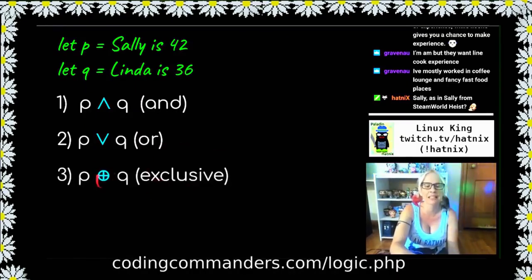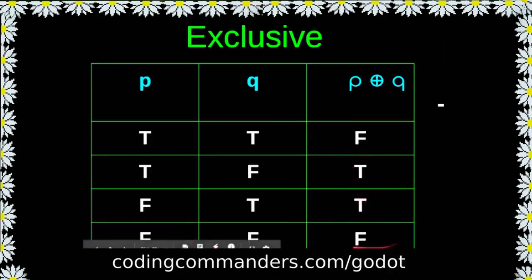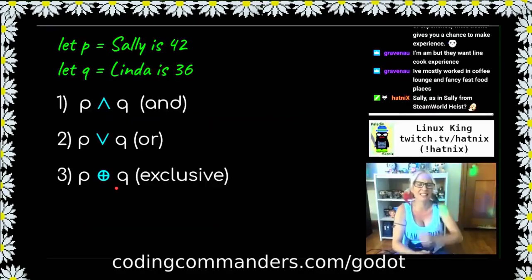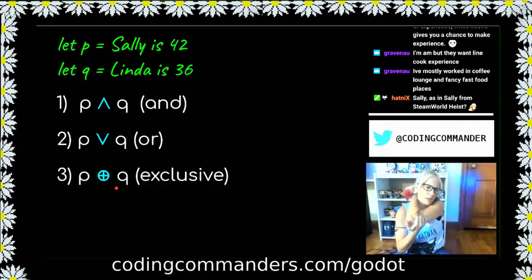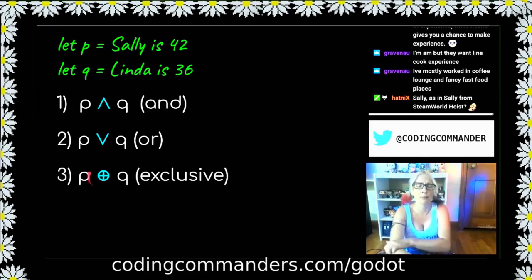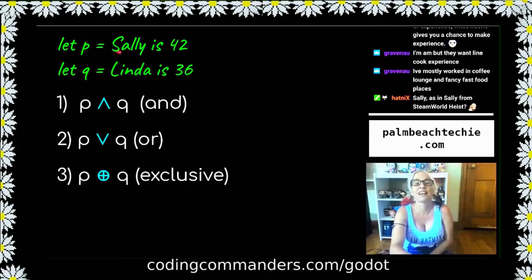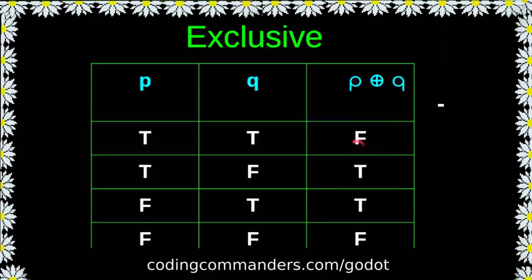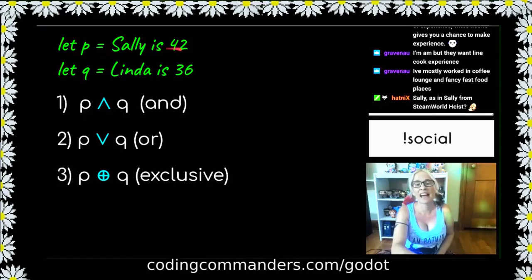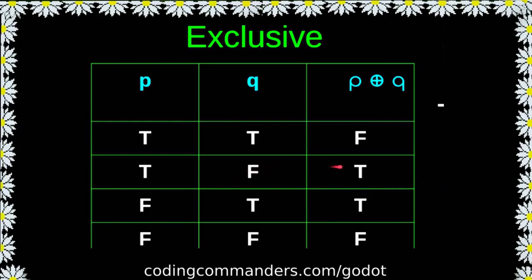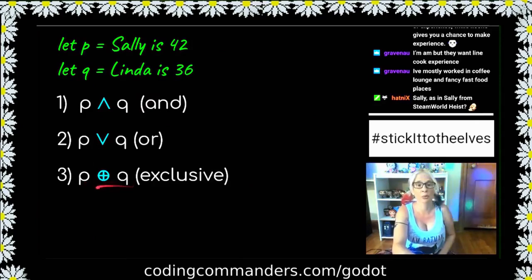Exclusive. This symbol means exclusive. There's two possibilities of truth and two of untruth. I didn't see an exclusive operator in GDScript. If anybody knows there is one and I just missed it somewhere, let me know. But I didn't see an exclusive operator. But many programming languages have this. What this means is this evaluates true if p is true or q is true, but they can't both be true. If Sally's 42 and Linda's not 36, this will be true. If Sally's not 42 but Linda is 36, this will be true. If Sally's not 42 and Linda's not 36, this will be false. If Sally's 42 and Linda is 36, this would be false.